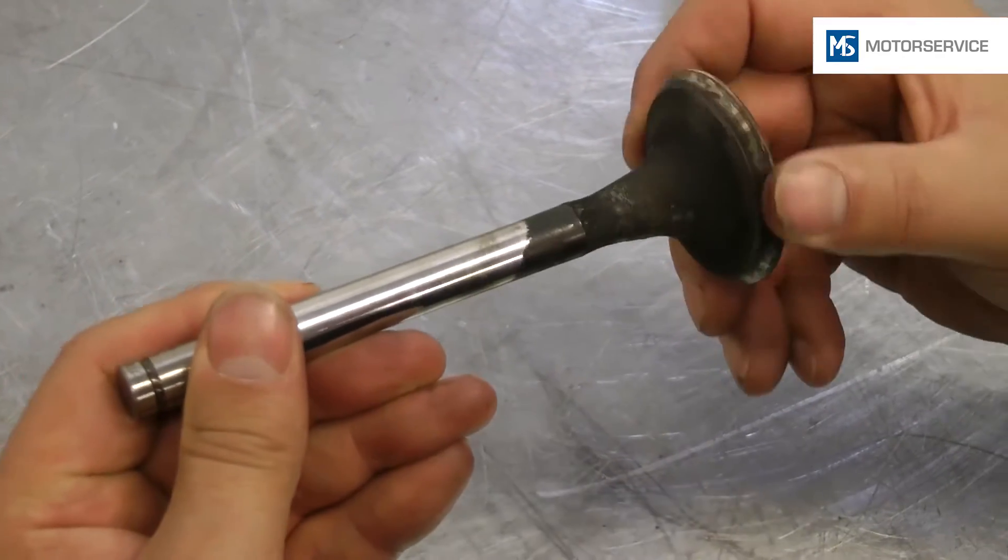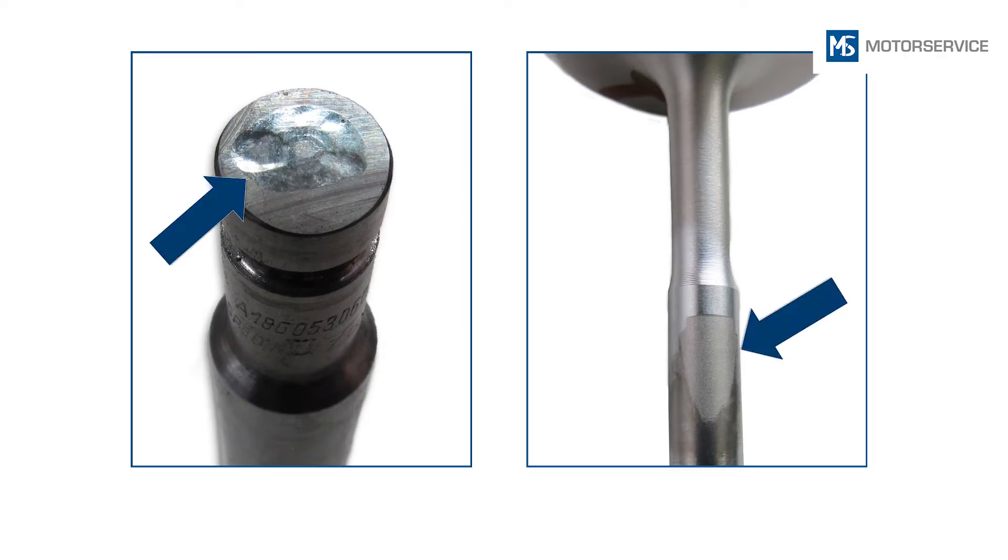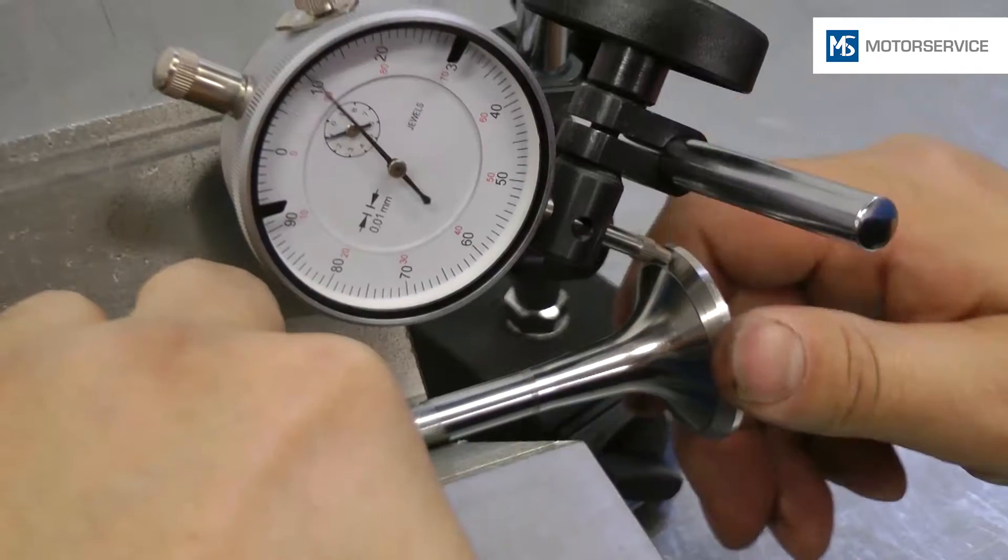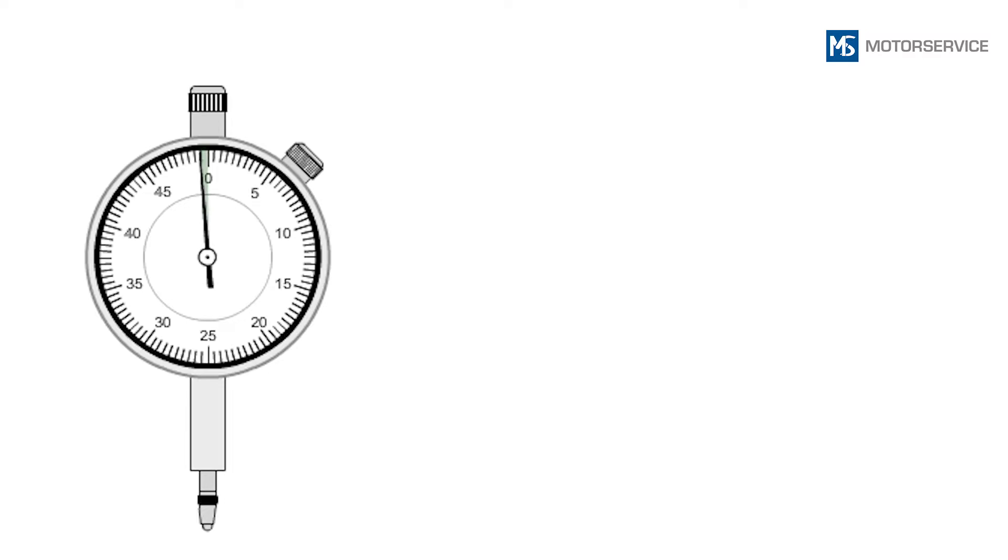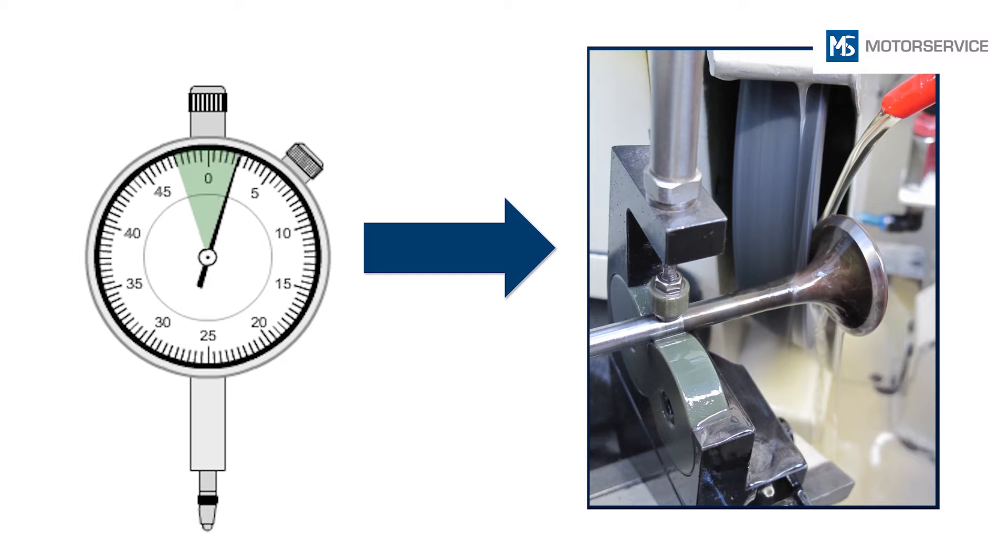Valves with damage in these places must no longer be used. Concentricity of the valves is checked with a dial gauge slide. Radial eccentricities can also be corrected with a valve grinding machine.